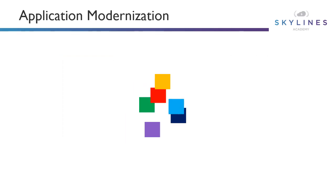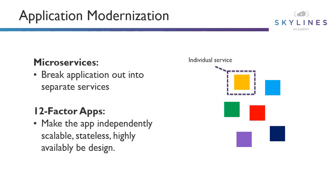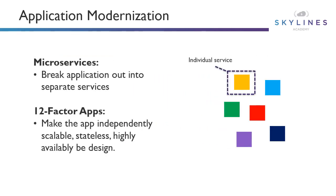The answer to this is to break it apart into what we call microservices, where each service is its own individual application and can be scaled separately. There's this concept of 12-factor applications — you make the app independently scalable, stateless, and highly available by design.